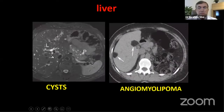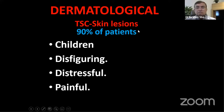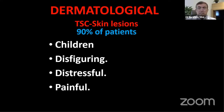The liver can also be affected by cysts or angiomyolipoma. The most distinct findings in tuberous sclerosis patients are dermatological, affecting 90% of patients. Since this is primarily a disease of childhood, there is a great burden on pediatricians and general practitioners to understand and diagnose it early. The skin involvement is very disfiguring, distressful, and painful.